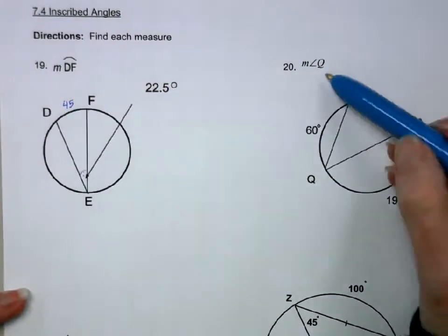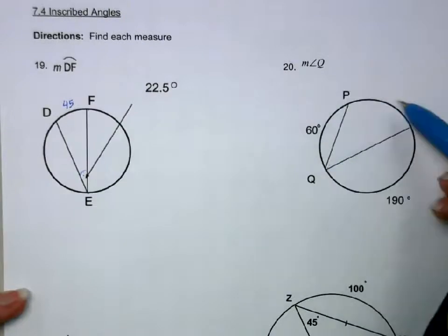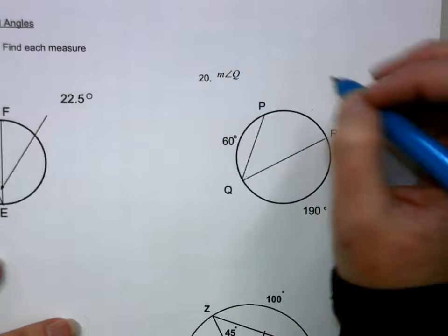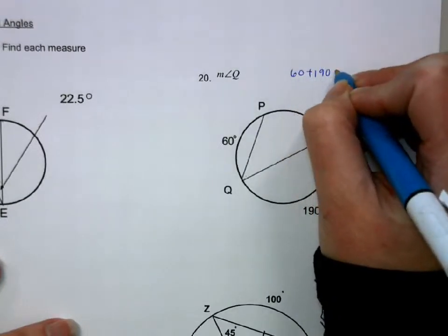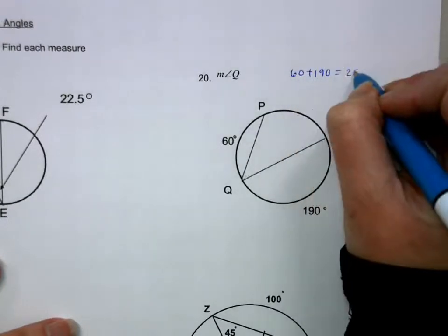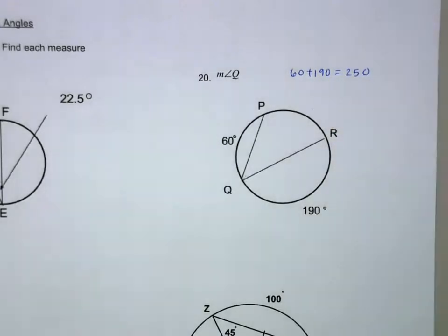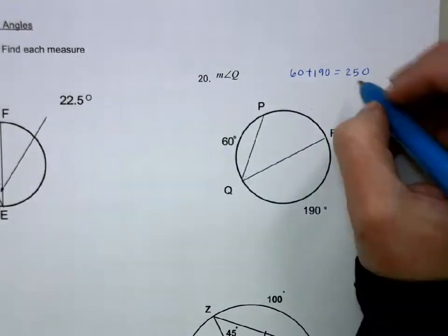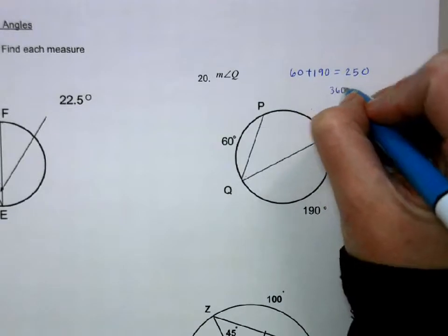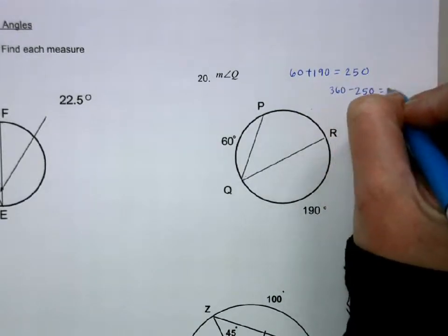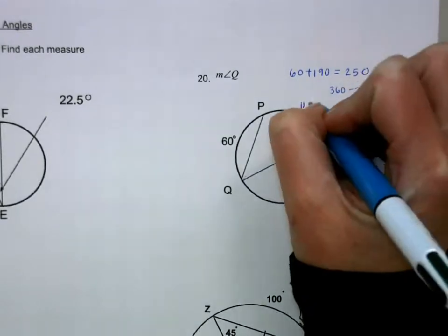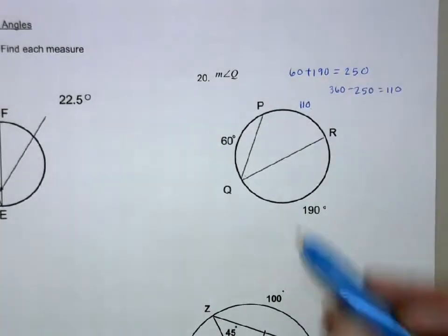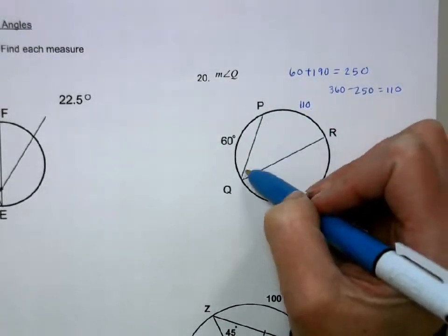Here, to find angle Q, I need to find this arc. So I'm going to take 60 and 190 is 250. I'm going to take 250 and subtract that from 360. That gives me 110. So this is 110. The angle is going to be half of that, or 55.